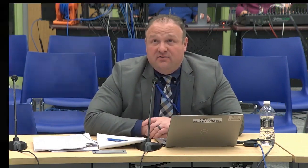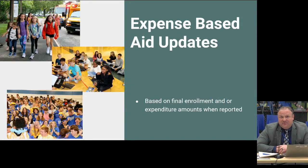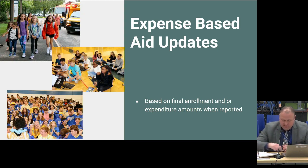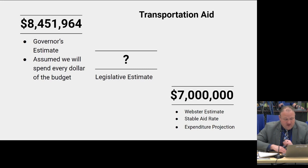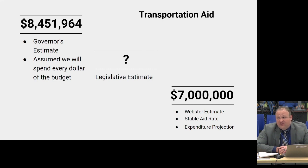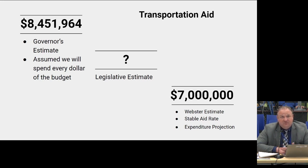That covers foundation aid. The rest of state aid we'll look at is the expense-based aids. Remember, these are all based on enrollment or expenditure amounts when we report. First up is transportation aid — the governor gave us an estimate. I'm projecting we'll be at seven million dollars based on what we're going to end the year at expense-wise. Our aid rate hasn't changed. Transportation aid will come in at around seven million dollars for next year.